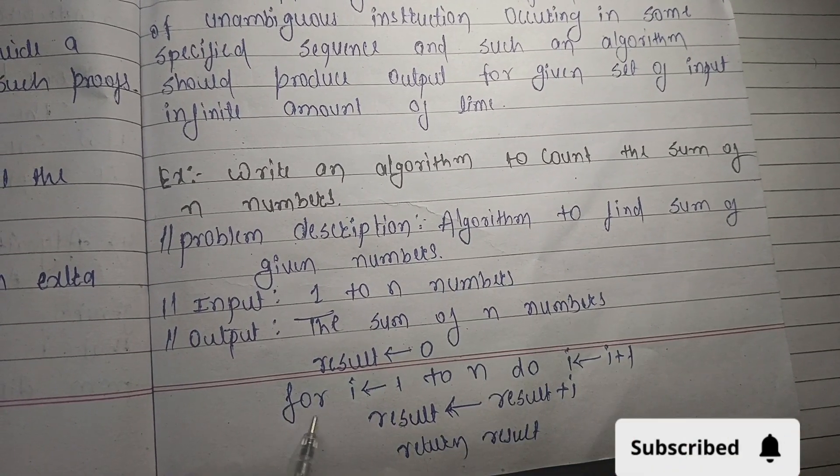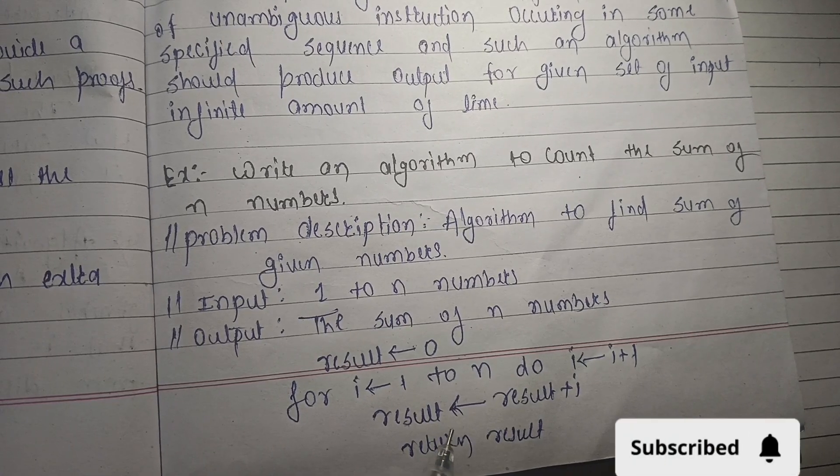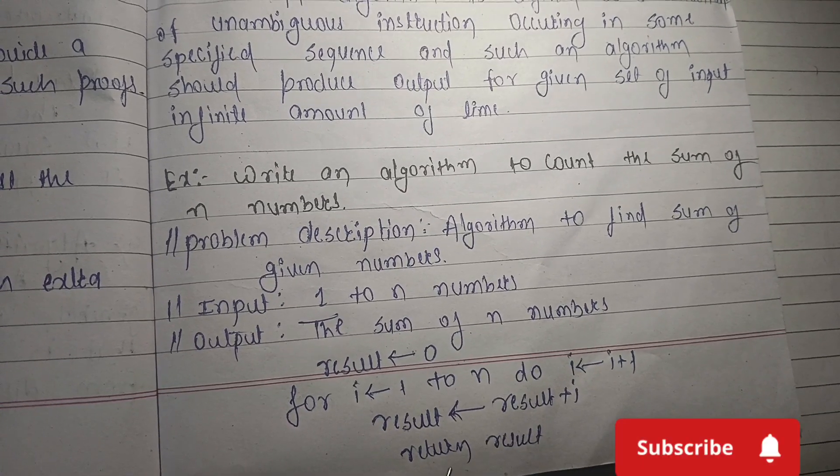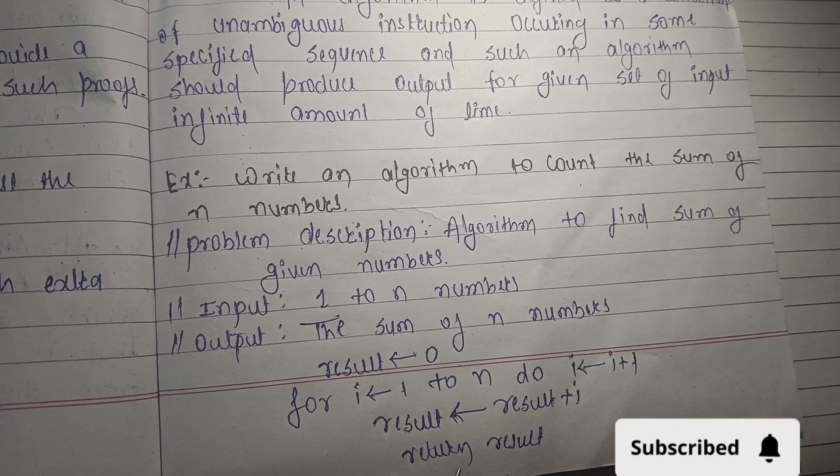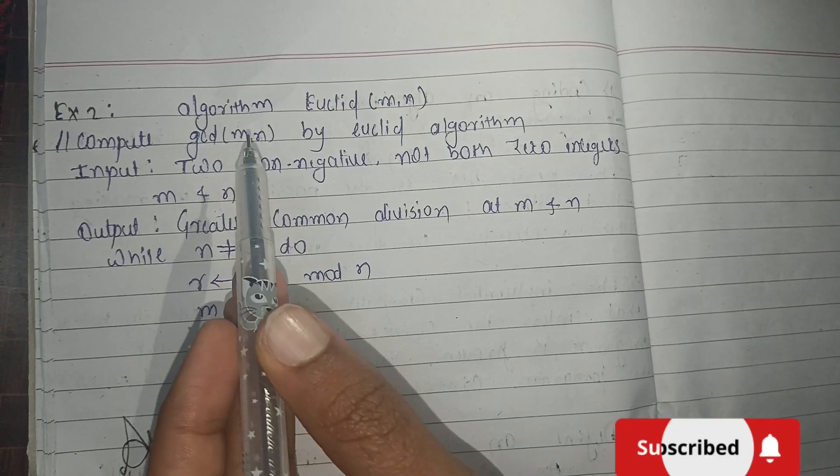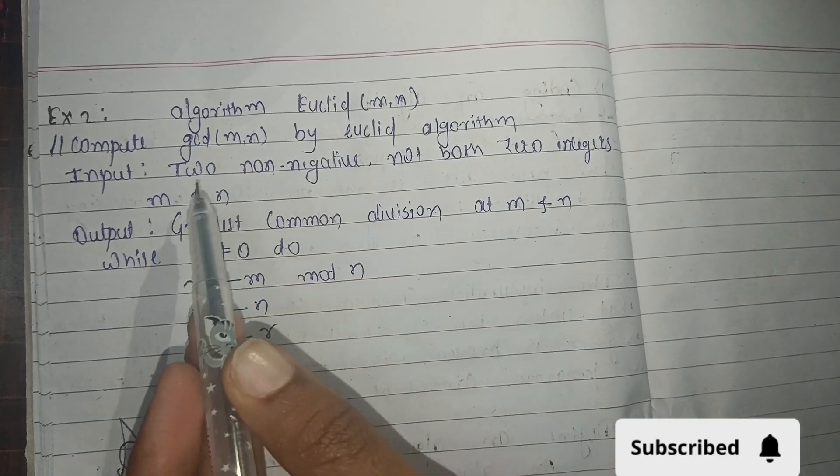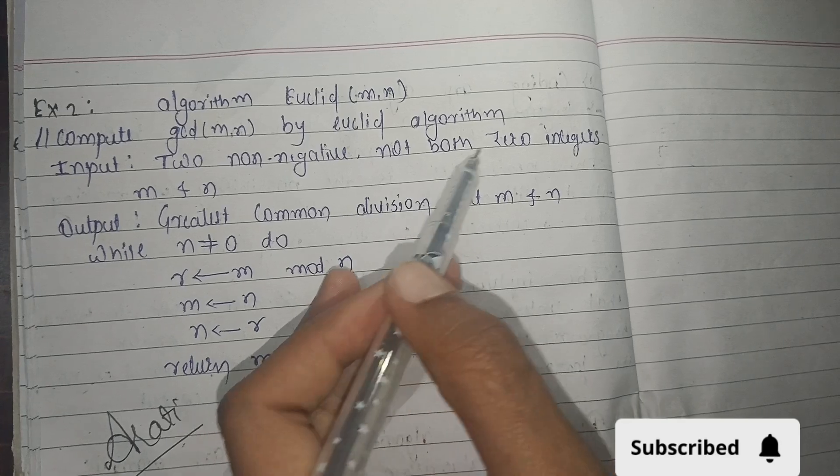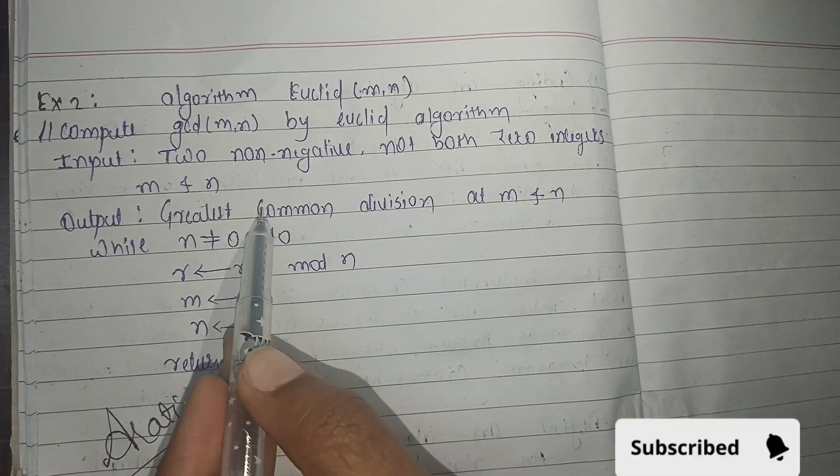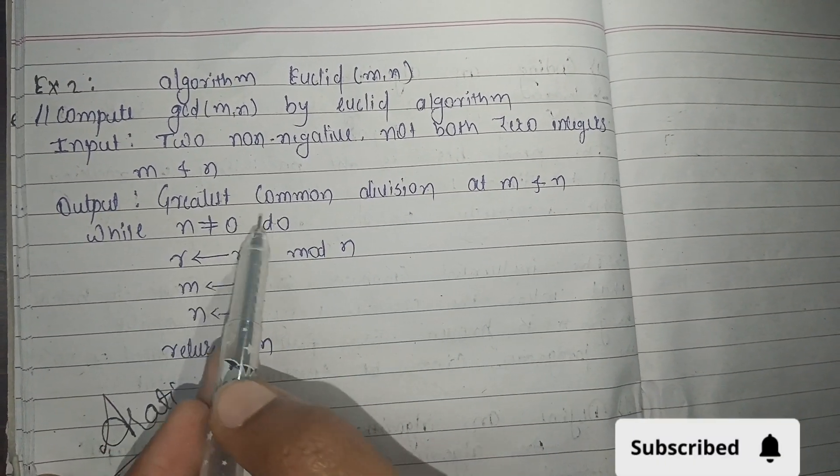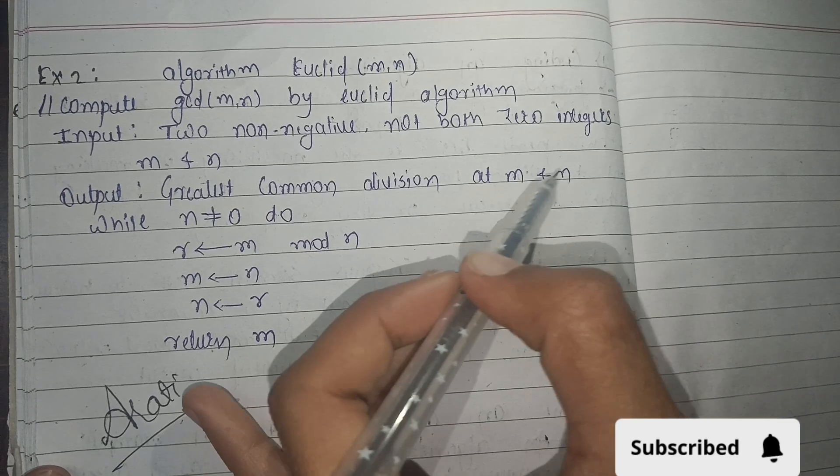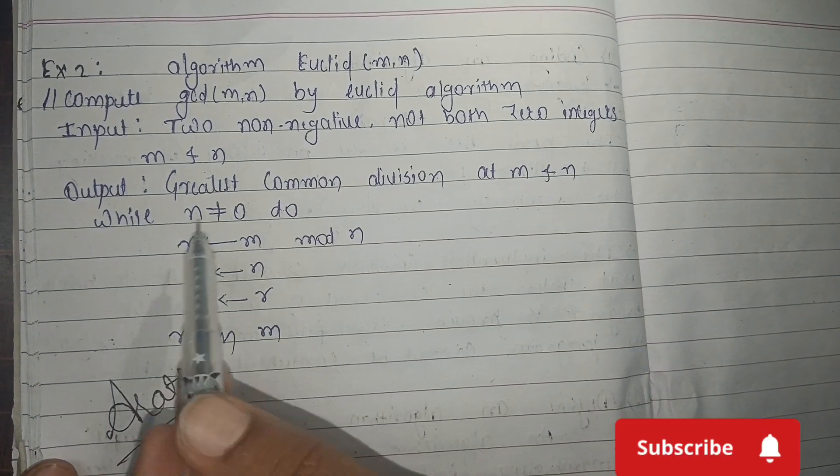Here we are using a for loop, and result equals result plus i. Then result is returned. Algorithm for Euclid: Input is two non-negative integers (not both zero) m and n. Output is greatest common divisor of m and n. Here we are using a while loop.